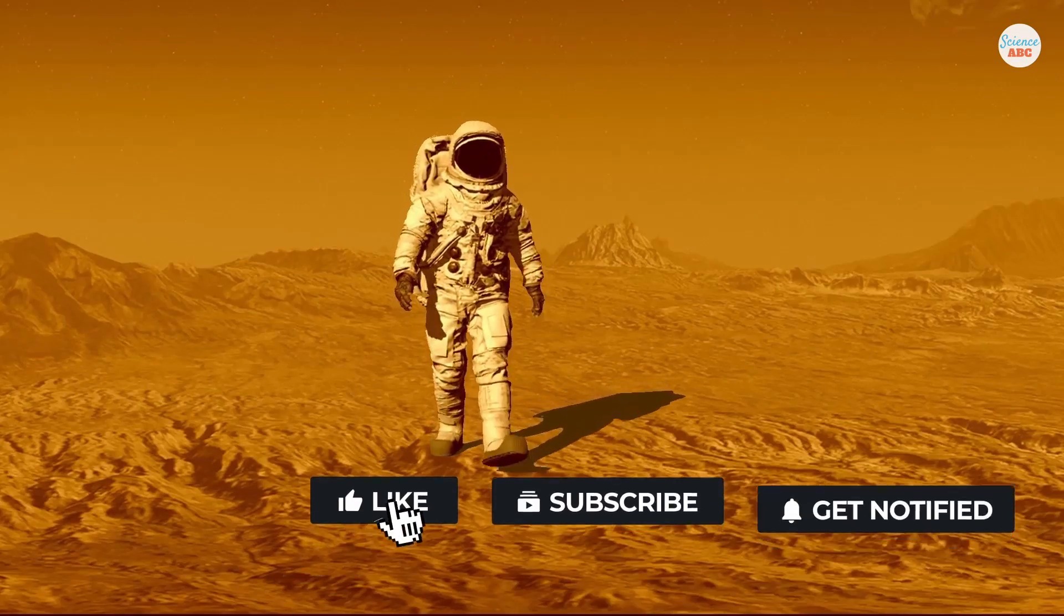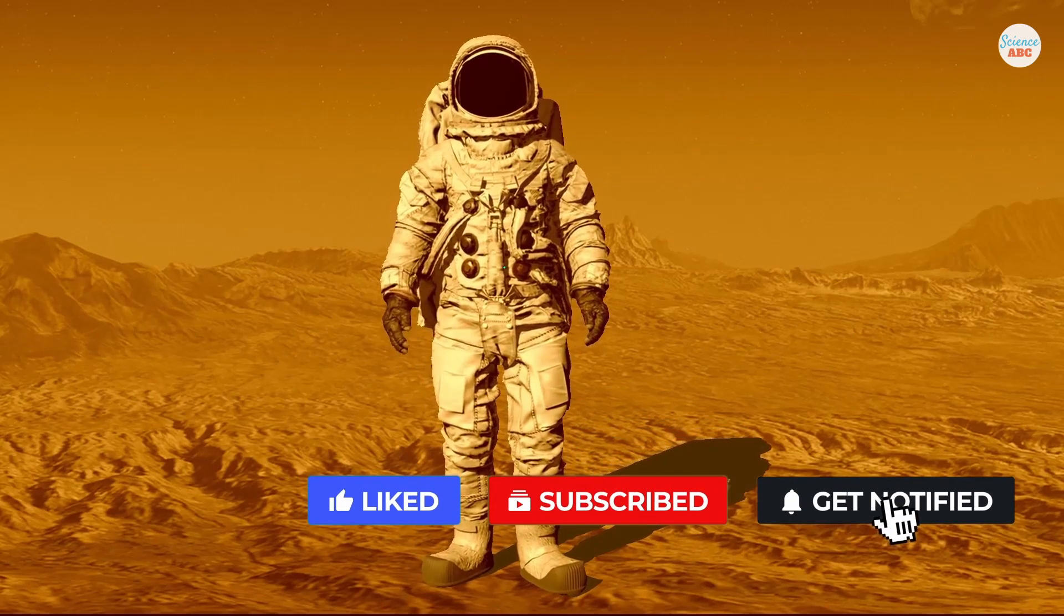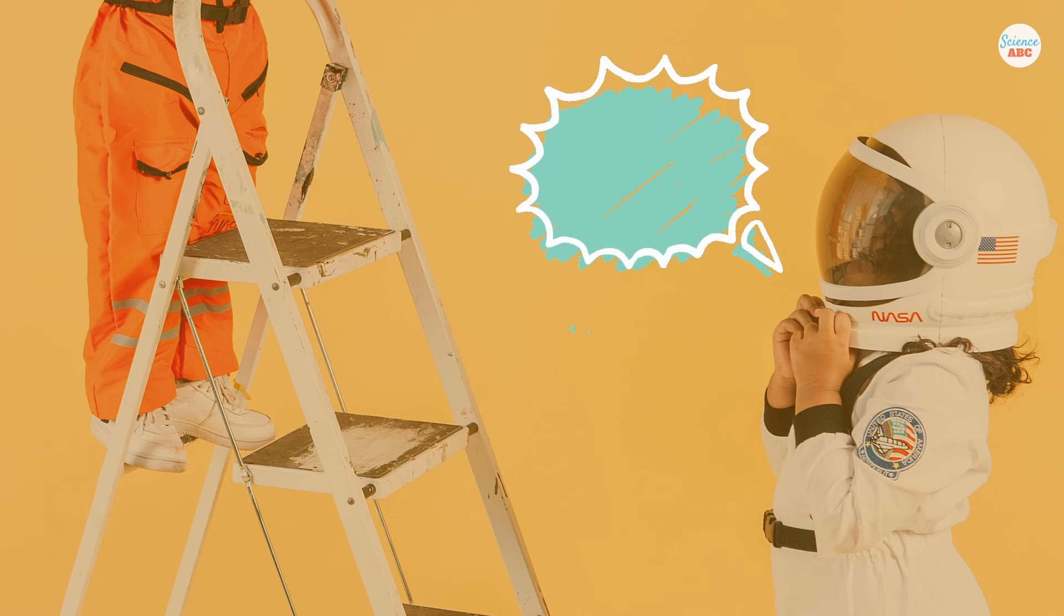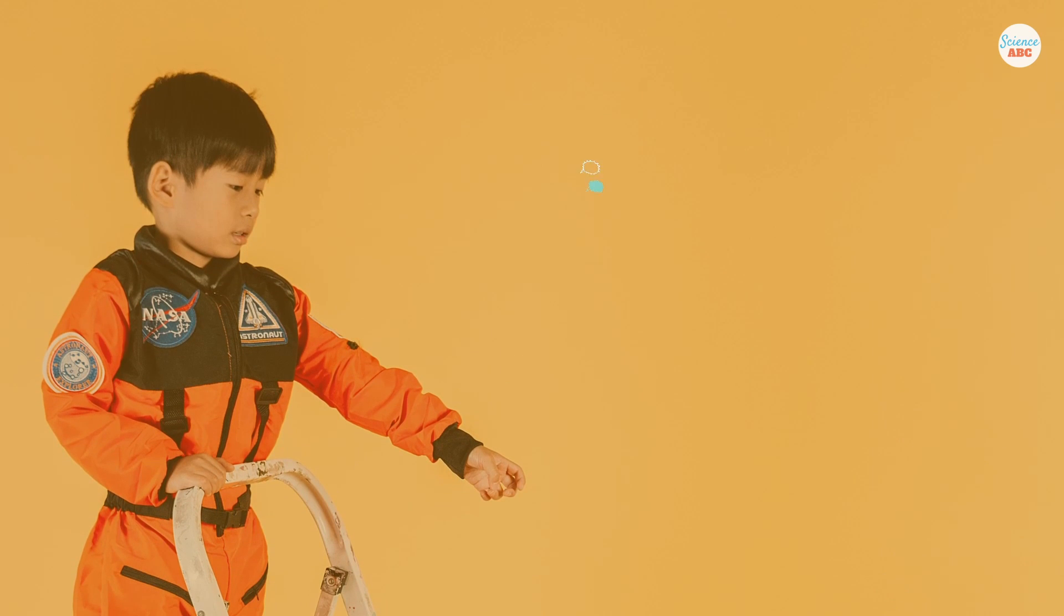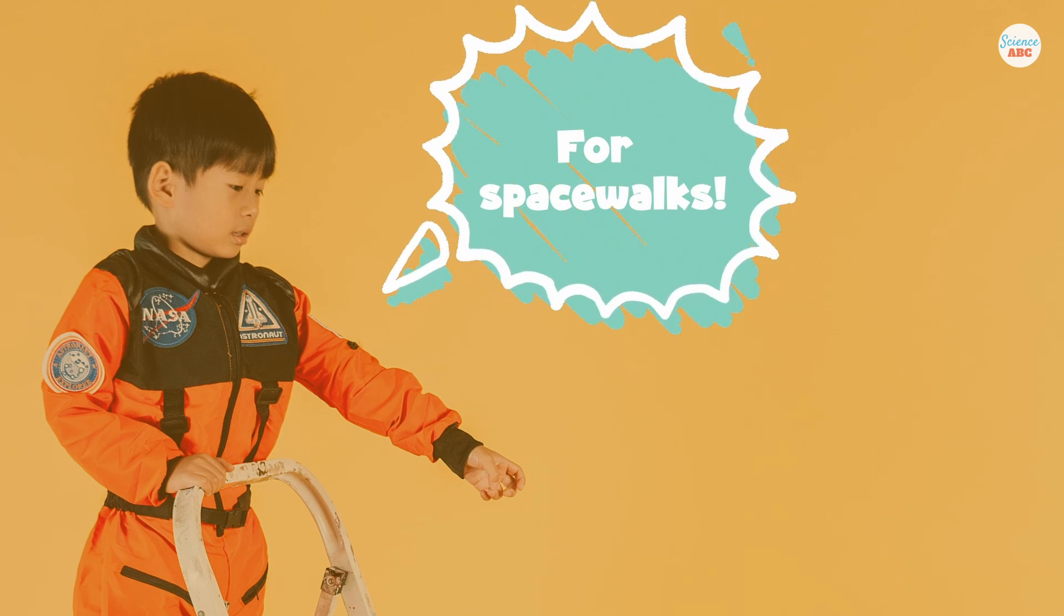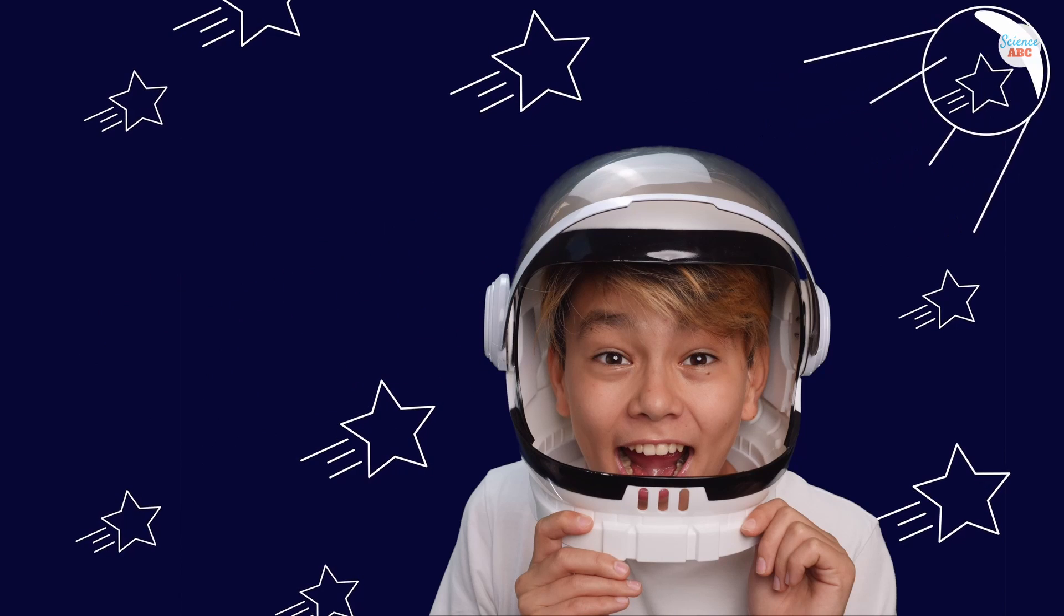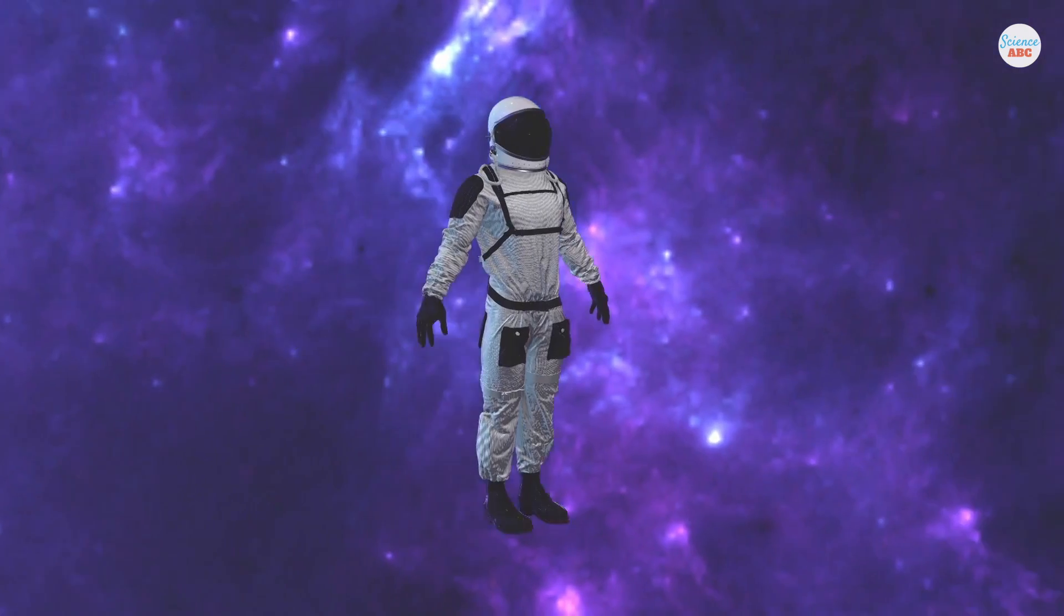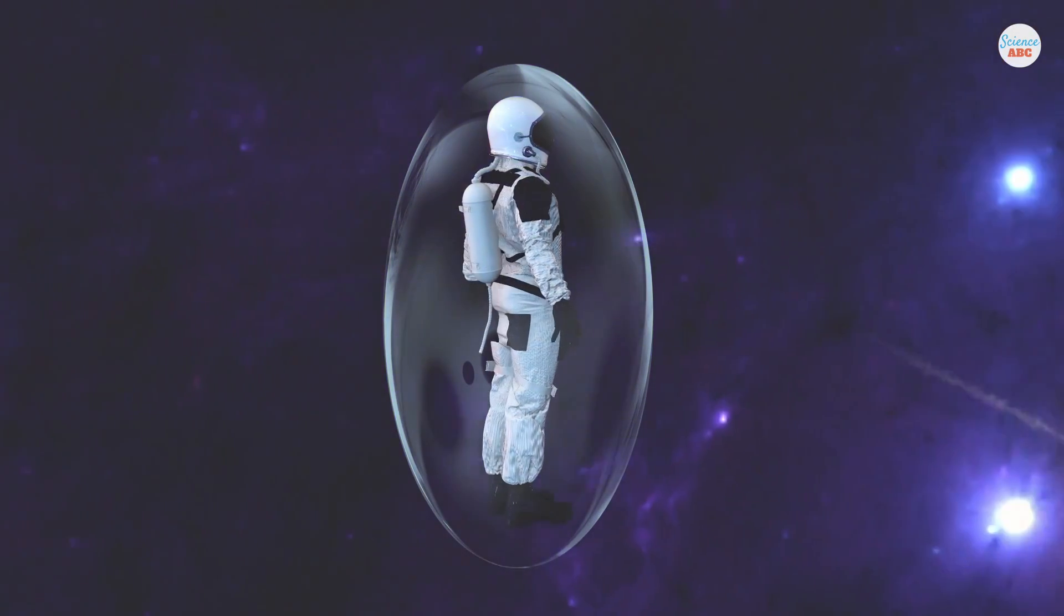The white suit that you likely associate with spacewalks in movies like Gravity are EVA suits, which stand for extravehicular activities. This suit is entirely different from the orange ACES suit. An EVA suit is what astronauts use during their spacewalks. These are designed for survival in the harsh conditions of space, which include near-vacuum and thermal extremes. The suit also protects against debris from floating in space that may do perilous harm to spacewalkers.